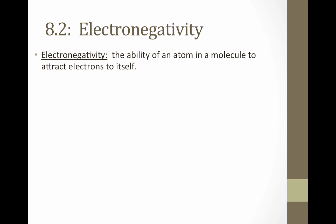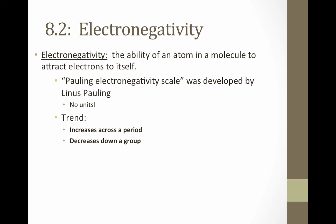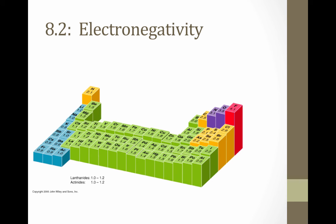Finally, we have electronegativity, which is the ability of an atom in a molecule to attract electrons to itself. We measure electronegativity using the Pauling electronegativity scale, developed by Linus Pauling. It has no units because these are relative values. The trend is that electronegativity increases across a period and decreases down a group. As we go across a period, since the nucleus is getting more and more positive, it is more and more able to attract electrons to itself. As we go down a group, the nucleus is getting more positive but electrons are getting further away, so the nucleus is less able to attract electrons.